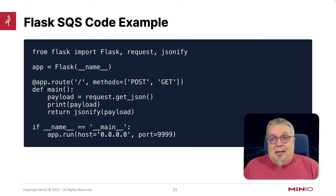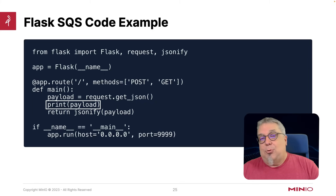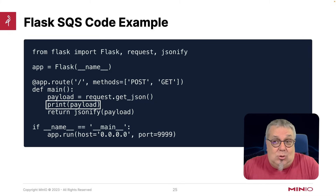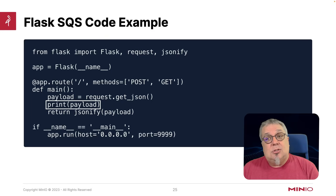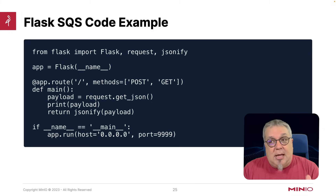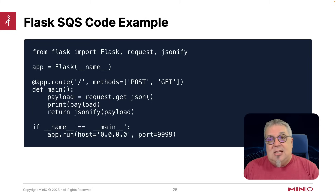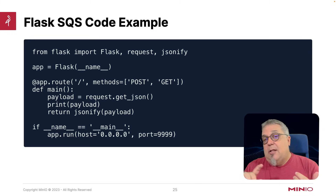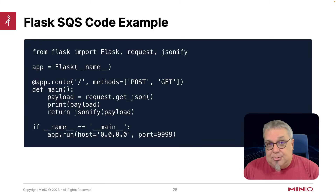This code example actually has one line I don't need, and that's the print payload — I only added that so that if you do deploy this, you can see something. What you're going to see is the JSON that comes out of a Min.io event, and the Min.io event JSON is actually very robust. It's got lots of detail about the bucket that triggered it, the object that triggered it, and all kinds of good stuff.